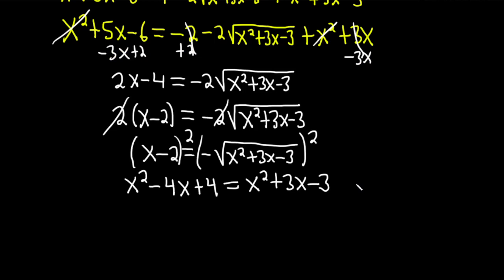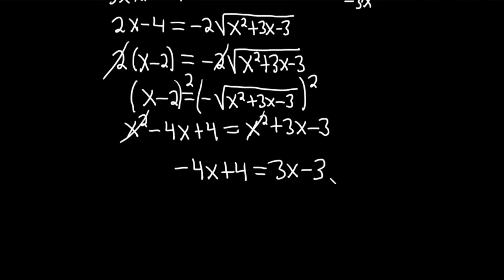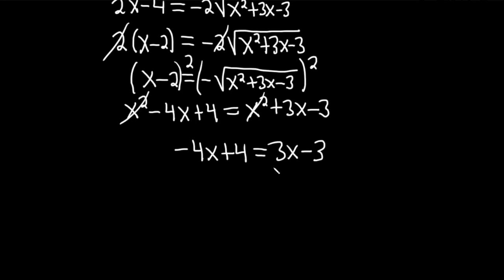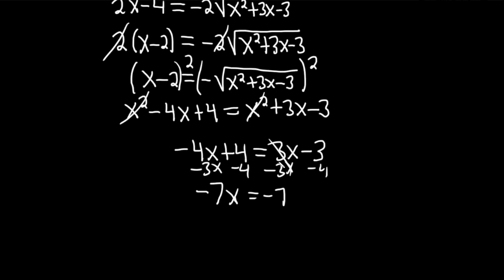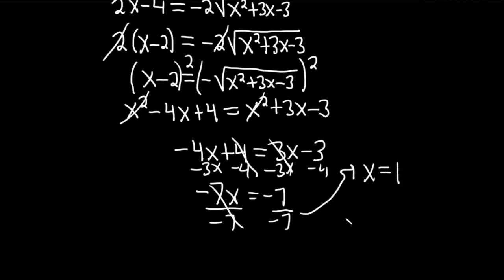The x squared terms cancel. So we get negative 4x plus 4 equals 3x minus 3. Subtracting 3x from both sides gives minus 7x, and subtracting 4 gives minus 7 on the right: minus 7x equals minus 7. Dividing by negative 7, we get the beautiful answer x equals 1.